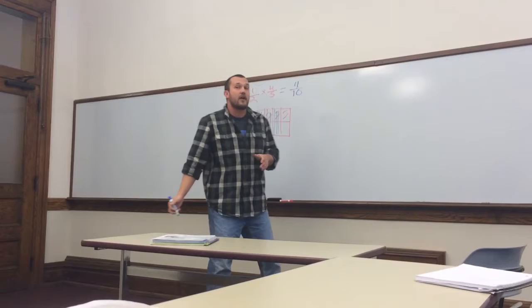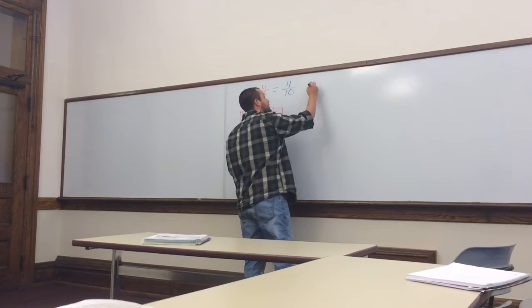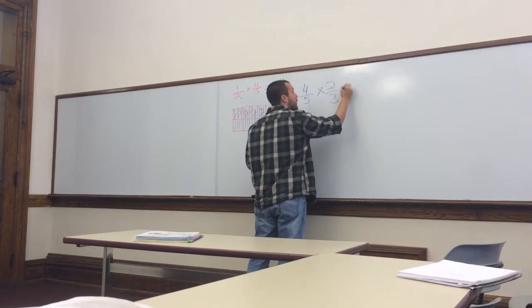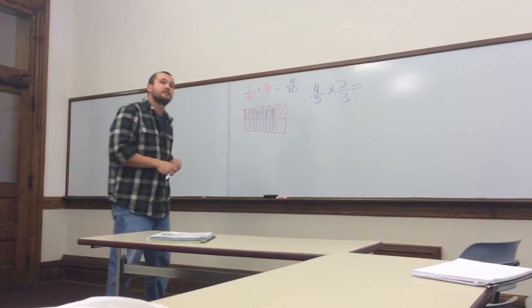What we're going to do now is I'm going to put a couple examples up on the board, and we're going to work through them together, okay? Okay, so the first one we have here is 4 fifths times 2 thirds. Brent, what is our first step in solving this?